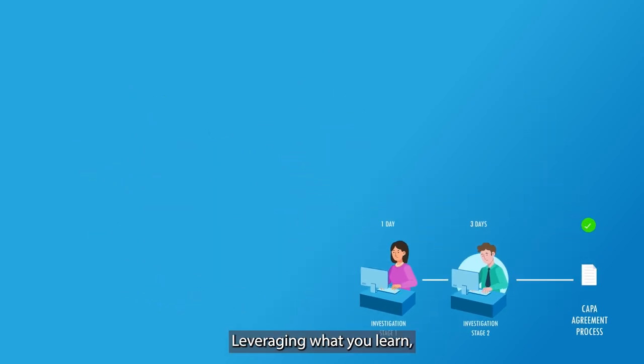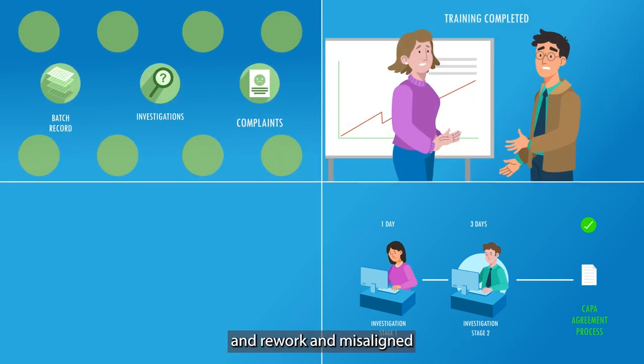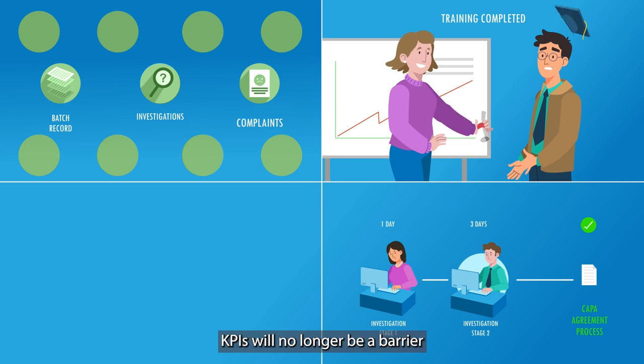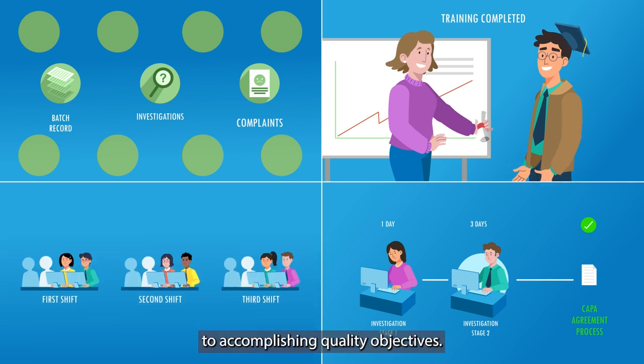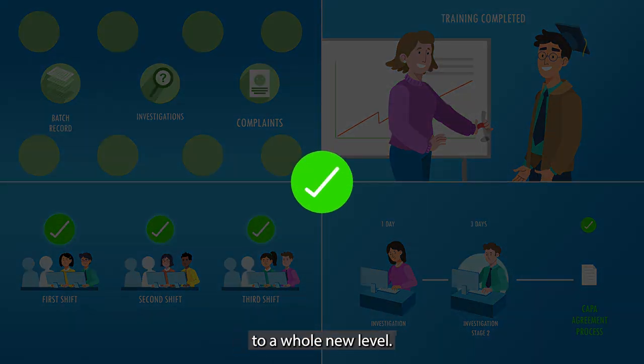Leveraging what you learn, you can evolve operations so that procedures are executed correctly the first time around. And rework and misaligned KPIs will no longer be a barrier to accomplishing quality objectives. In short, your quality data could take your company to a whole new level.